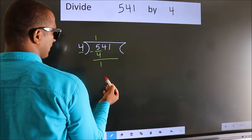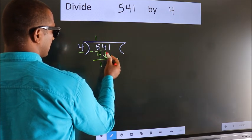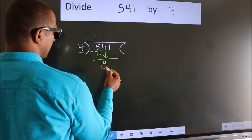We get 1. After this, bring down the beside number. So, 4 down. So, 14.